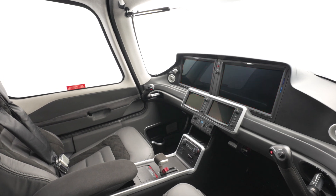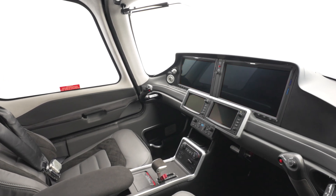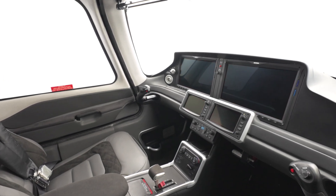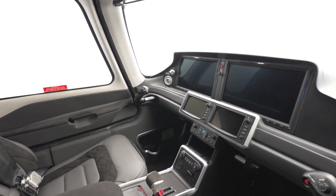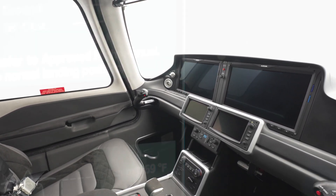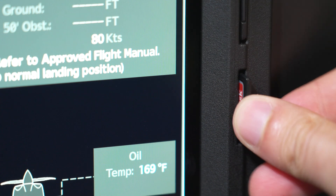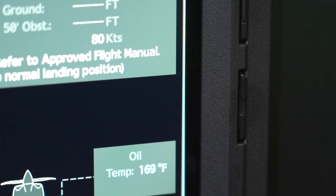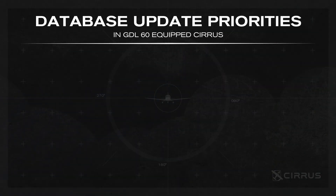If databases were ever unable to update in your Cirrus, your avionics are still capable of accepting manual database updates through an SD card. In fact, the priority for database updates in your GDL60-equipped Cirrus is in this order. Number one, through an SD card.